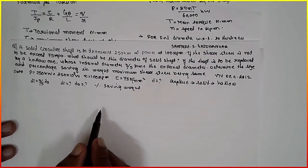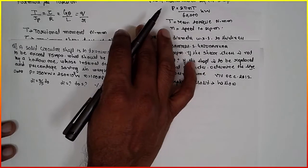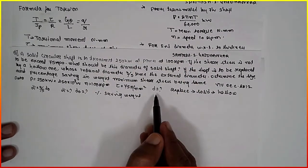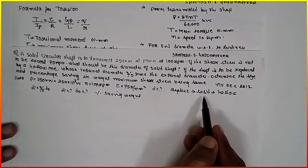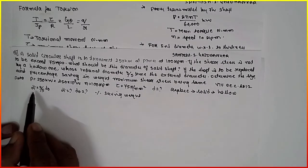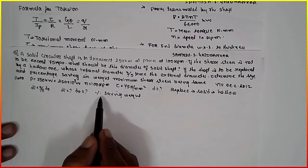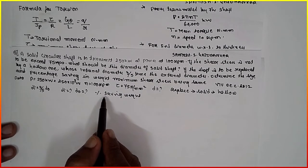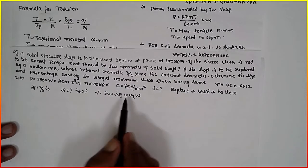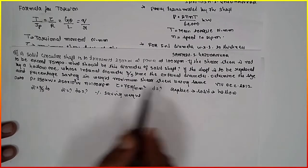Maximum shear stress will be the same. First we find the diameter of the solid shaft, then we replace the solid shaft with the hollow shaft and find its dimensions, and finally we find the percentage of saving in weight.